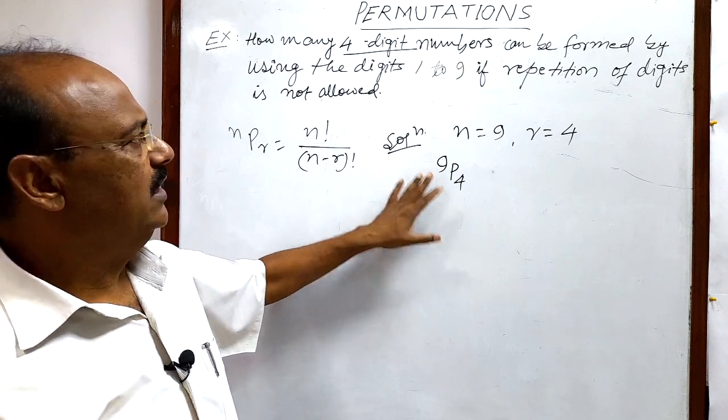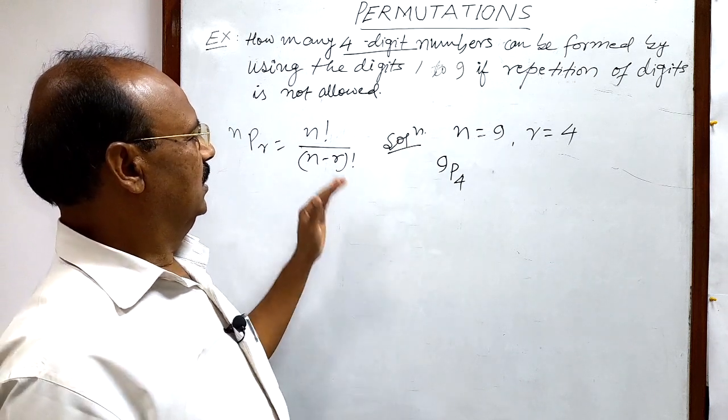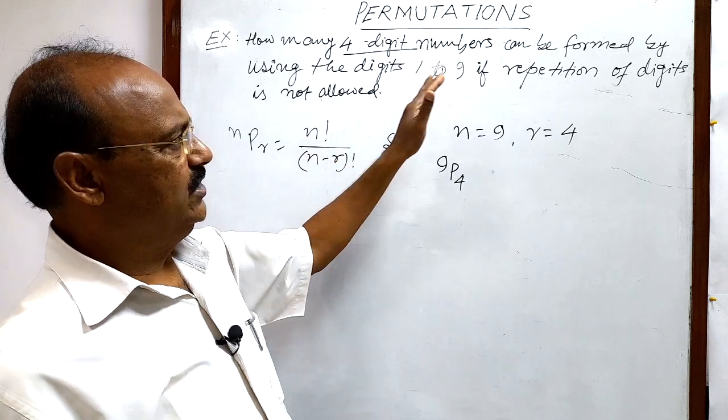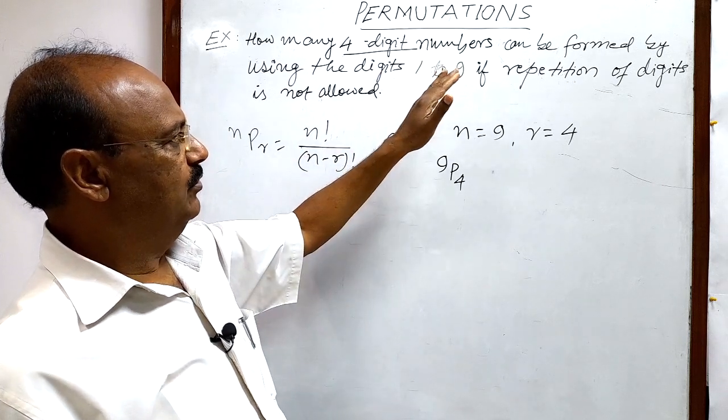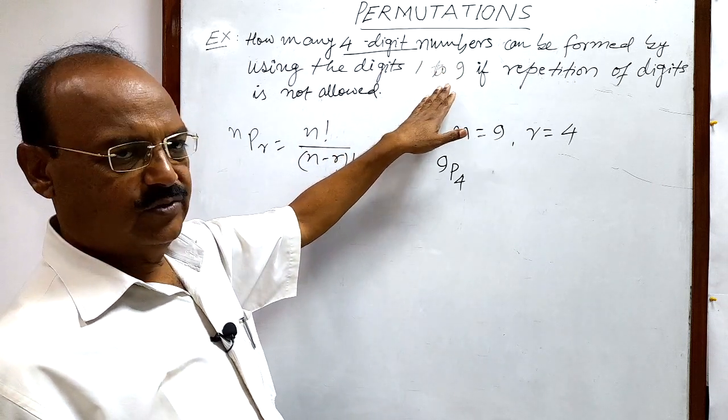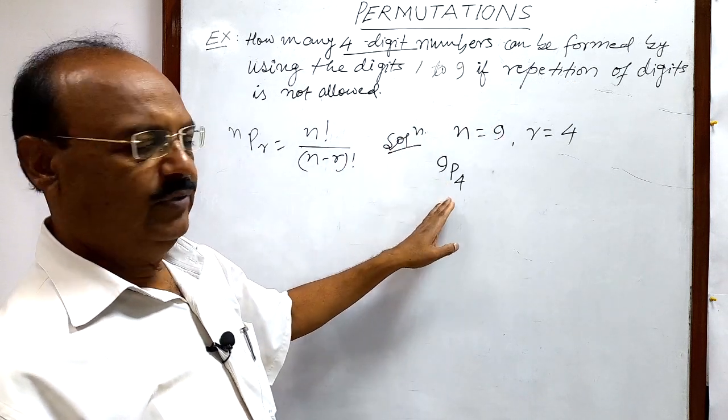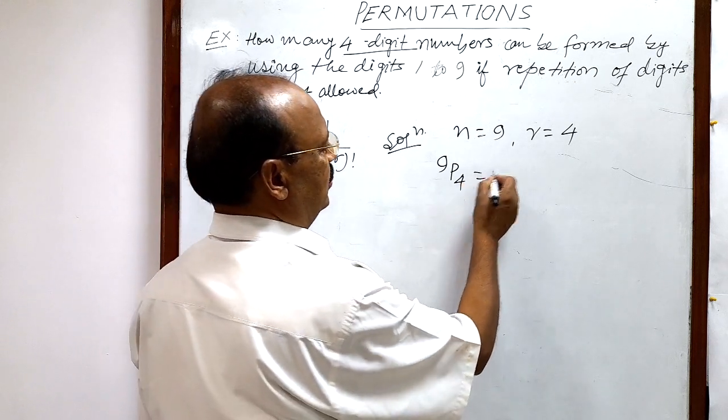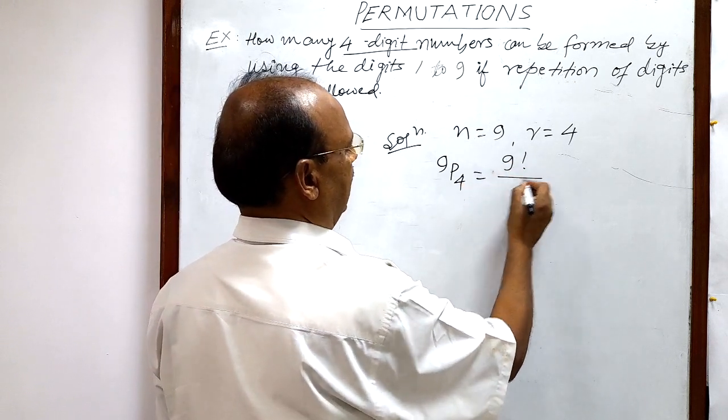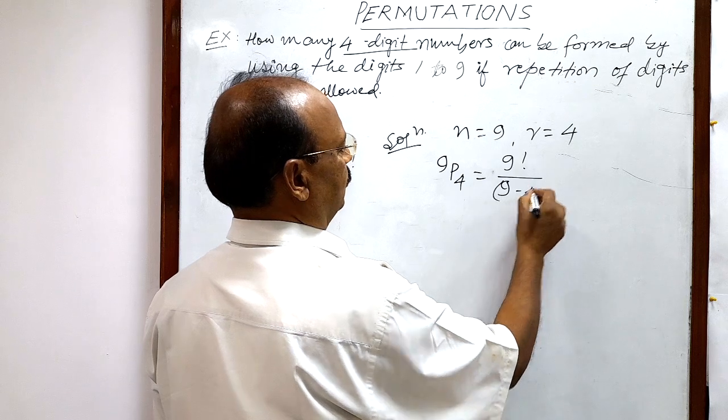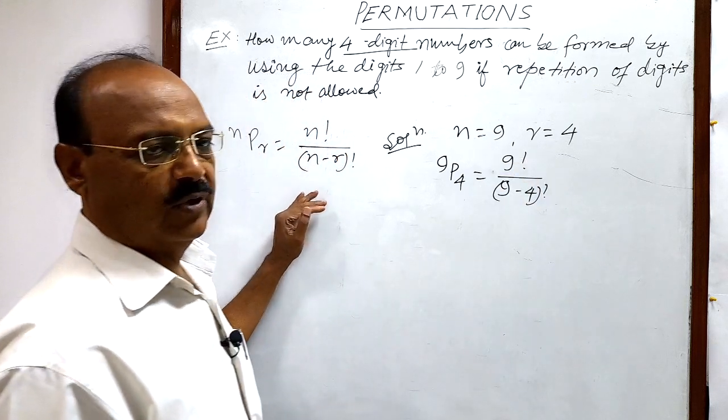You can write here that total four-digit numbers which can be formed from the digits 1 to 9 when repetition of the digits is not allowed is 9P4, and this is equal to 9 factorial by 9 minus 4 factorial. We are using this formula here.